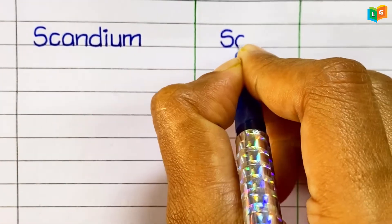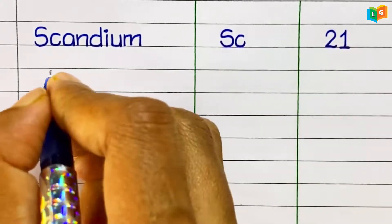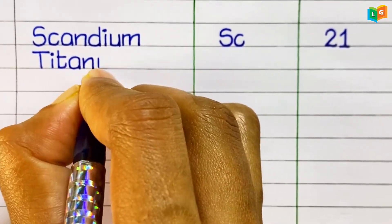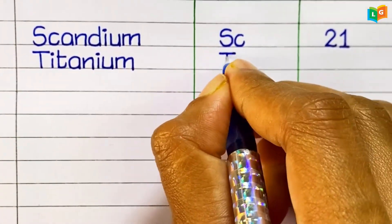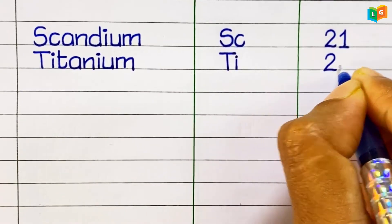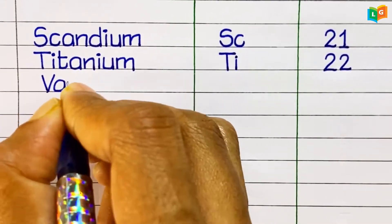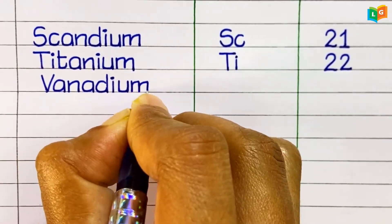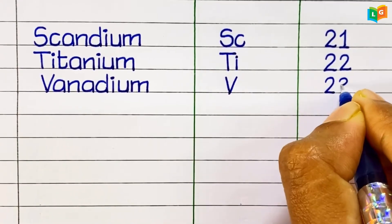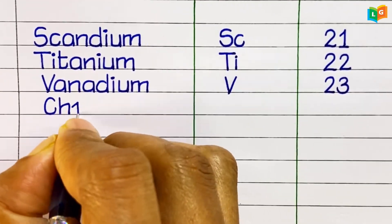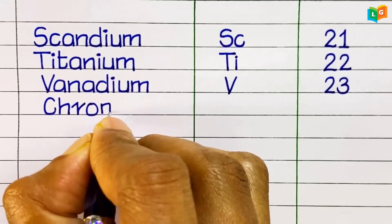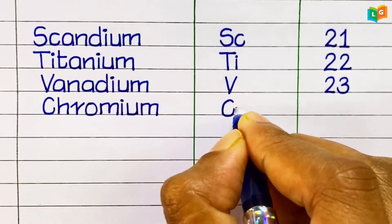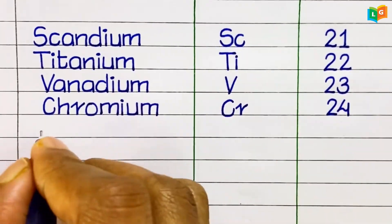Scandium, symbol Sc, atomic number 21. Titanium, symbol Ti, atomic number 22. Vanadium, symbol V, atomic number 23. Chromium, symbol Cr, atomic number 24.